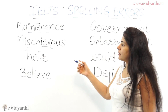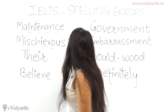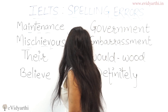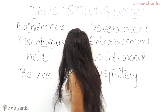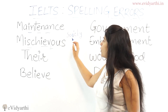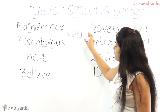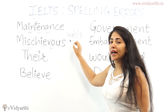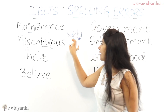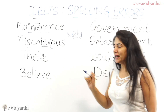Another word where students make quite a few mistakes is 'society.' The most common mistake here is with 'IE' — students write 'EI' instead of 'IE.' You have to be very careful: it's 'IE' in both 'society' and 'mischievous.'